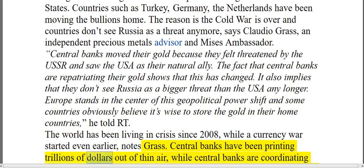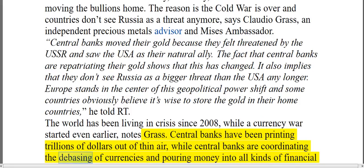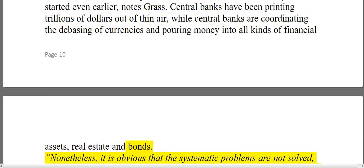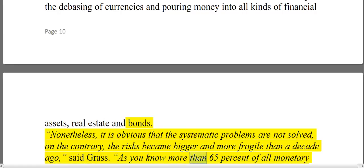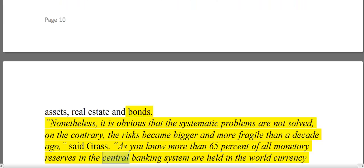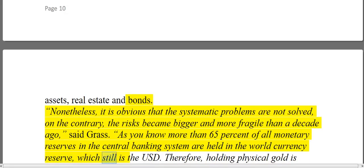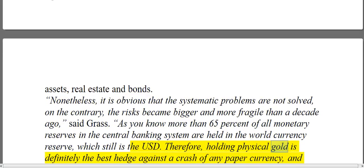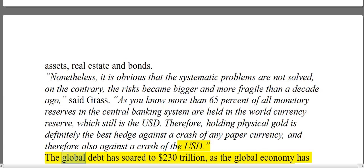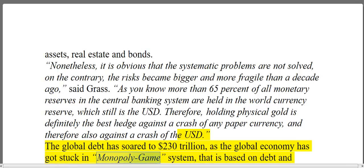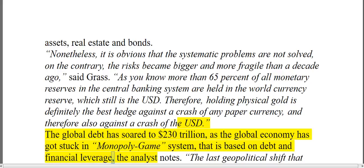Central banks have been printing trillions of dollars out of thin air, coordinating the debasing of currencies and pouring money into financial assets, real estate, and bonds. Nonetheless, the systematic problems are not solved — on the contrary, the risks became bigger and more fragile than a decade ago. As Grass notes, more than 65% of all monetary reserves in the central banking system are held in the world currency reserve, which still is the US dollar. Therefore, holding physical gold is definitely the best hedge against a crash of any paper currency, and therefore also against a crash of the US dollar. The global debt has soared to $230 trillion, as the global economy has got stuck in a monopoly game system based on debt and financial leverage.